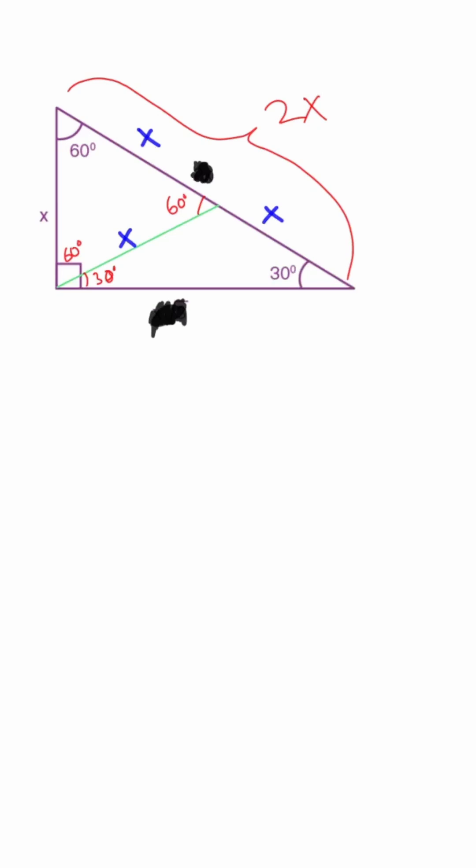And now, we can use the Pythagorean theorem to solve for this part. Let's call this y. So in Pythagorean theorem, we have x squared plus y squared equals the hypotenuse squared, which is 2x squared, and that equals to 4x squared.